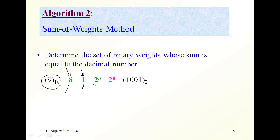8 is 2 to the power of 3, so in the third position in the binary number there is a 1 — which is this one. And 1 is 2 to the power of 0, so in the position with power of 0 there is also a 1. So this is 8 and this is 1, giving us 9 in base 2.